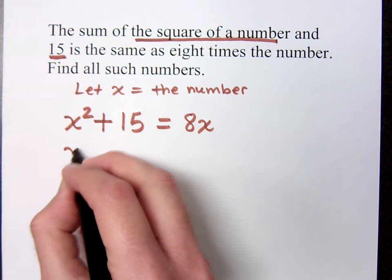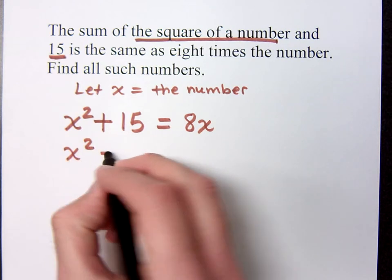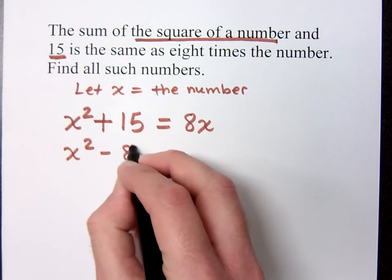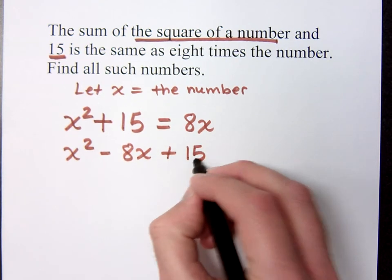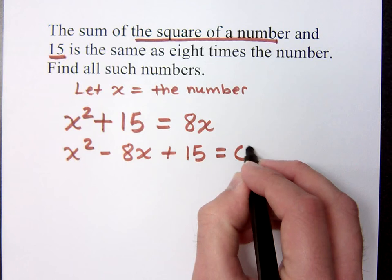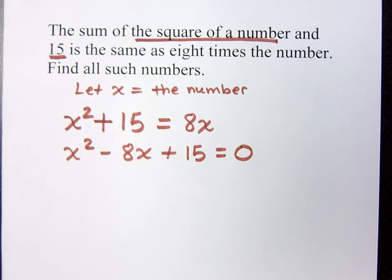All right, so you've got to subtract the 8x, right? And when you do that, make sure you put your terms in descending order. So, that's minus 8x plus 15. If you put plus 15 and then minus 8x, that's not the order that we like to have when we're trying to factor. Now, remember, this still is equal to zero. If you don't have it equal to zero, then you're not doing it right.